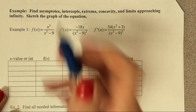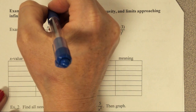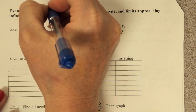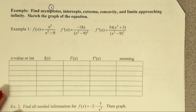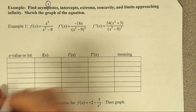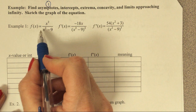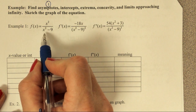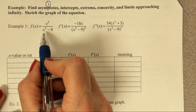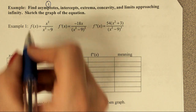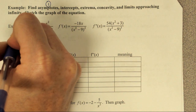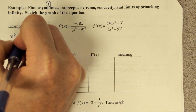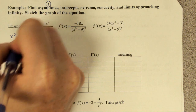So when we're trying to graph these types of functions, the first thing we always want to look for are the asymptotes. To find our vertical asymptotes, we have to look at the denominator and see what's going to make that denominator equal zero. We just take that denominator and set it equal to zero.